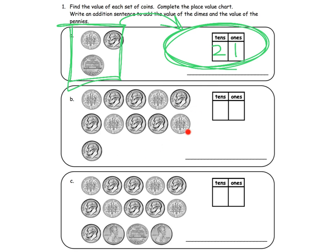All right. So here we go. We got one, two, three, four, five, six, seven, eight, nine, 10, 11. So we've got 11 dimes. So we're going to squeeze in 11 right here and zero ones.